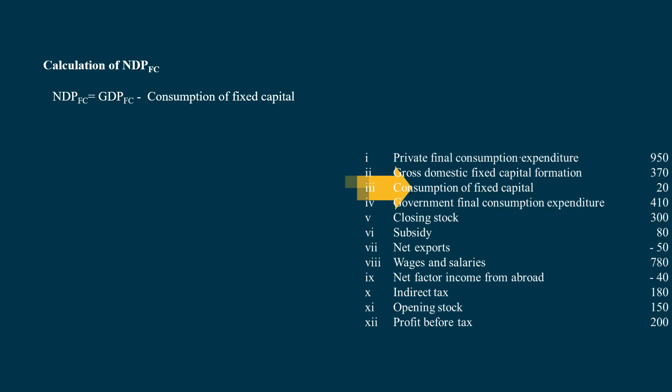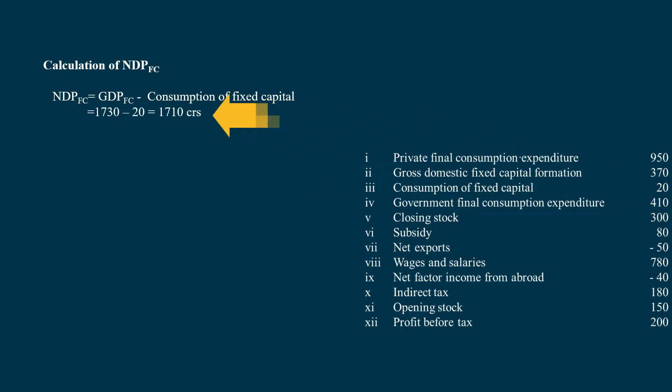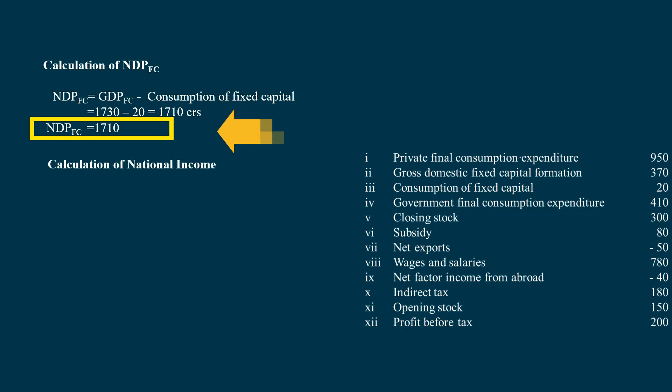Consumption of Fixed Capital is 20 Crores. Net Domestic Product at Factor Cost = GNP at Factor Cost minus Consumption of Fixed Capital = 1,730 minus 20 = 1,710 Crores.